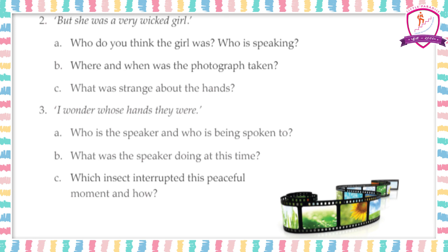Which insect interrupted this peaceful movement? Some insect interrupted them. It sat on the knitting needle, and then after some time it flew from there and settled on the sunflower. So it settled on the knitting needle first and then flew away and settled on the sunflower.